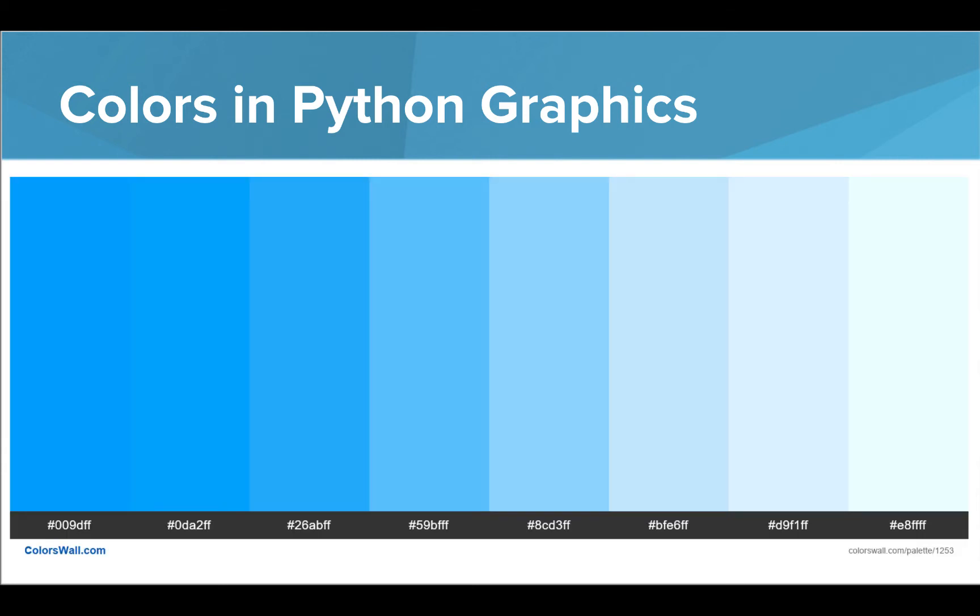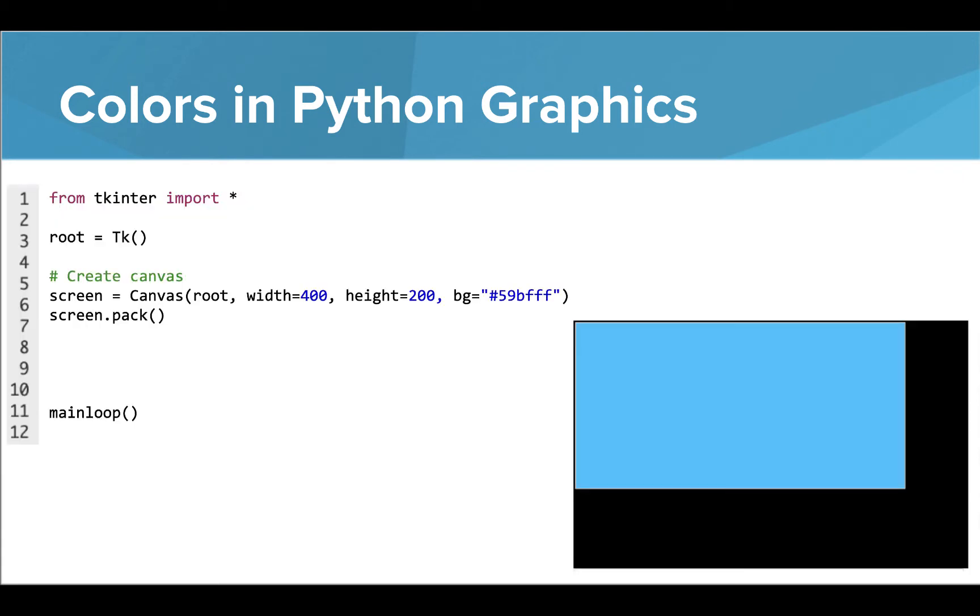Another way we can color items in Python Graphics is by using the hex code of a specific color. Hex codes are created by combining three codes of two characters each that tell how much red, blue, and green exists in the color. So if we wanted to use this specific shade of blue, we could take the hex code found at the bottom and enter it into our background attribute inside quotation marks. We just need to remember to include the pound sign at the beginning of the code.